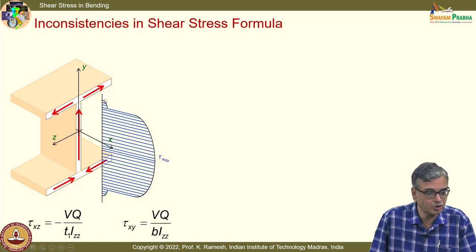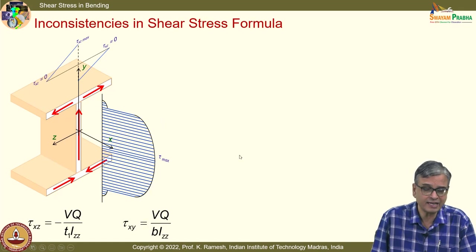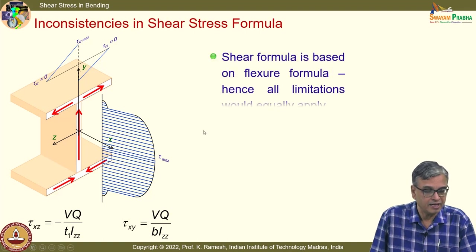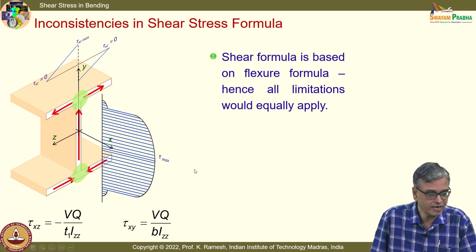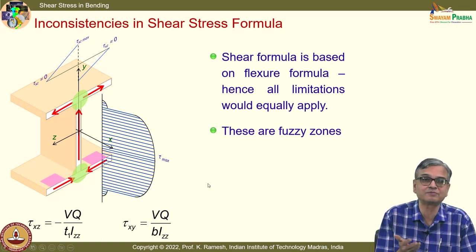You have τ_xz varying linearly in the flange. The other important limitation is that at the free surface you should have zero shear stress, but the formula predicts a small value — these are fuzzy zones. Shear has to be zero there, but the shear formula predicts a small value. However, comparing magnitudes, these values are very small, making this a reasonably simplistic analysis of an open cross section.